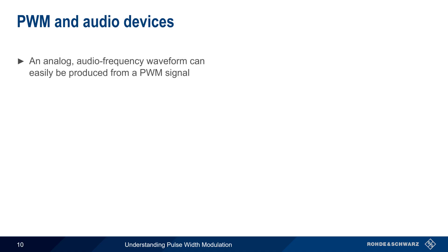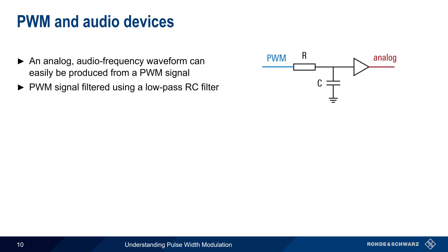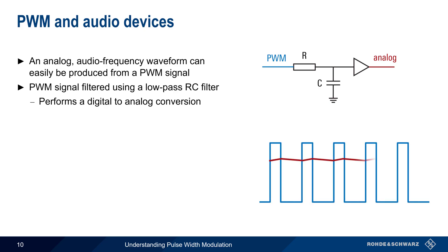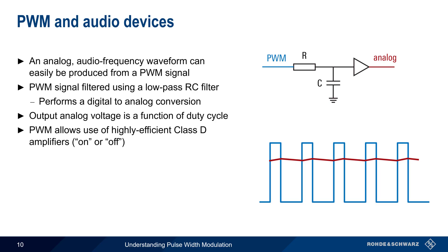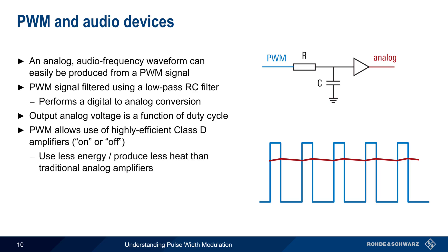Pulse width modulation is also used in some audio applications. The pulsed input signal is low-pass filtered, and this effectively performs a digital-to-analog conversion. The analog output voltage is a function of the input signal's duty cycle. The advantage of this approach is that pulse width modulation can use Class D amplifiers, which are either on or off, and are therefore much more efficient than so-called linear amplifiers. As a result, pulse width modulation-based audio uses less energy and produces less heat than using traditional analog amplifiers, which is particularly helpful in the case of handheld or battery-powered devices such as smartphones.